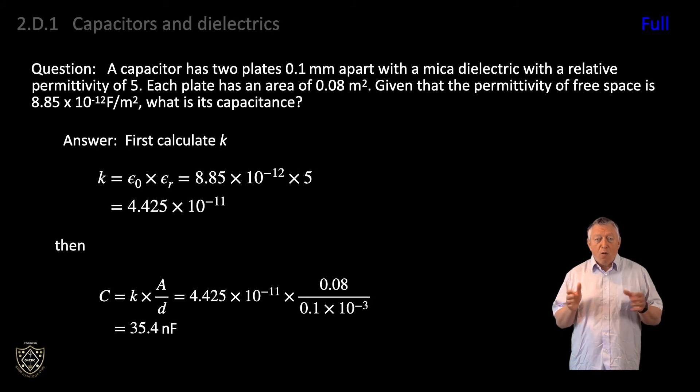The syllabus text does not mention epsilon 0 and epsilon r, although these terms are given in EX309 formula sheet. It may be that you will be given the value of k directly, or you may need to calculate it. In the example we have just done, the answer is given quite precisely, so that you can check your calculation. In reality, capacitors would normally deviate quite significantly from their nominal value, and so such precision would be unusual and not necessary.